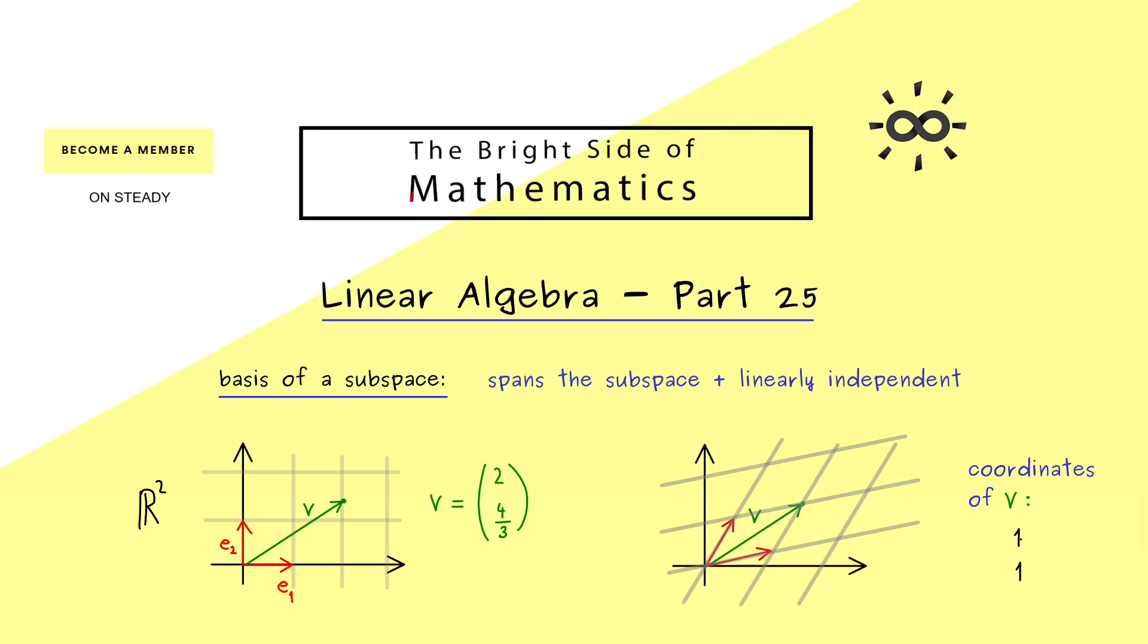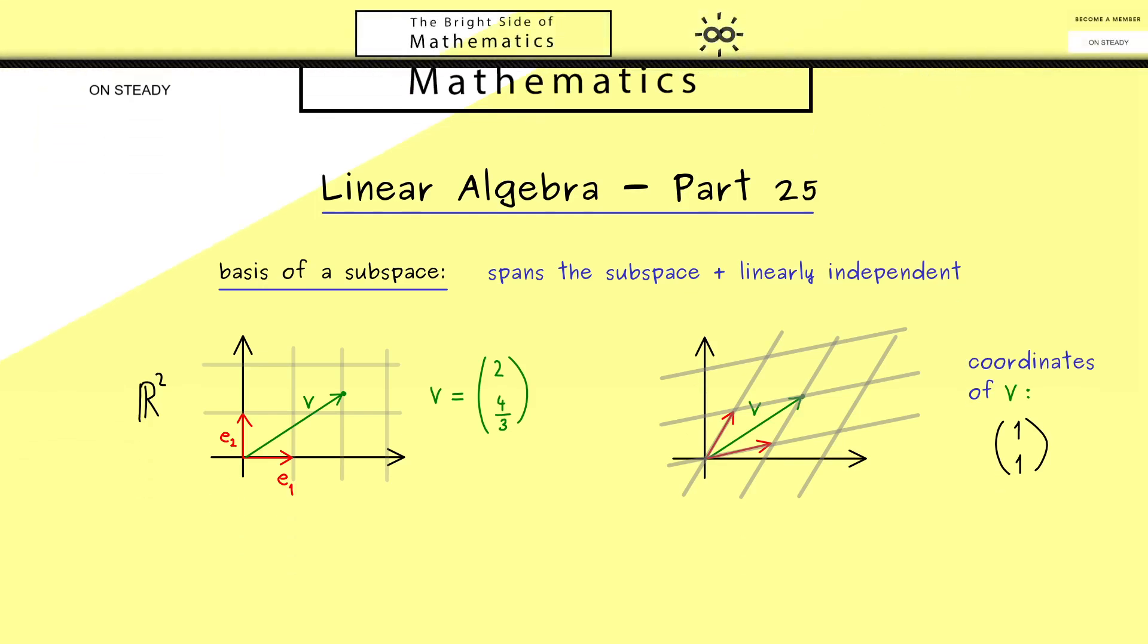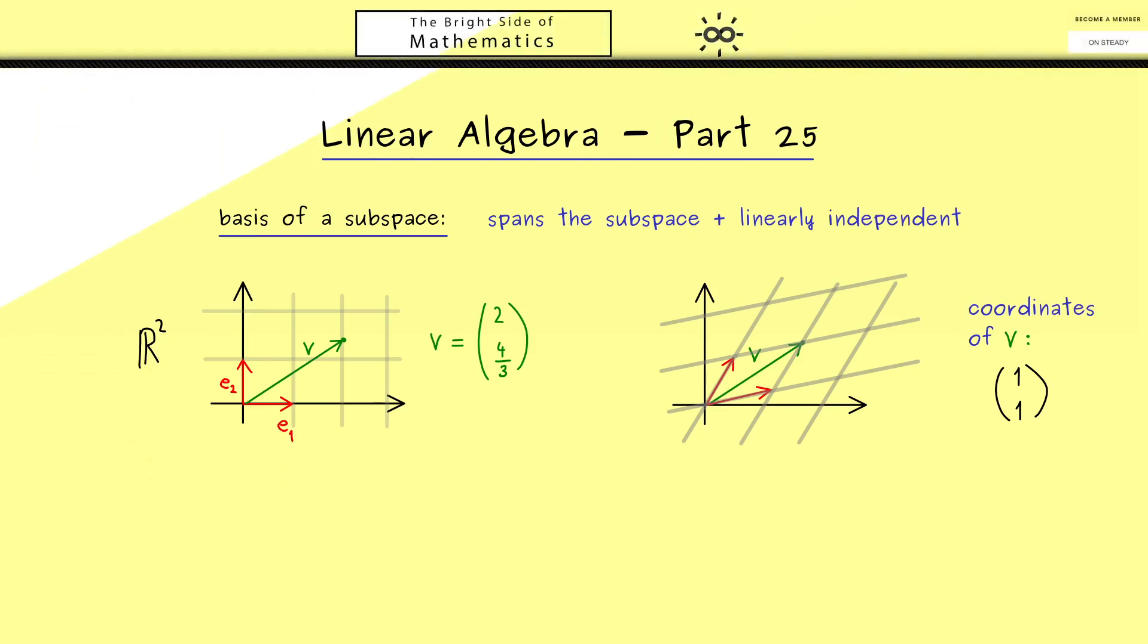And now of course here on the right hand side we could write these two coordinates as a column vector again. This might be a little bit confusing because it's the same vector in the plane just represented by different bases. I show you later how we can avoid confusion there. However first let's write down the definition for coordinates in the general sense. So you have already seen it's not a complicated notion at all but we will need it for all calculations later.